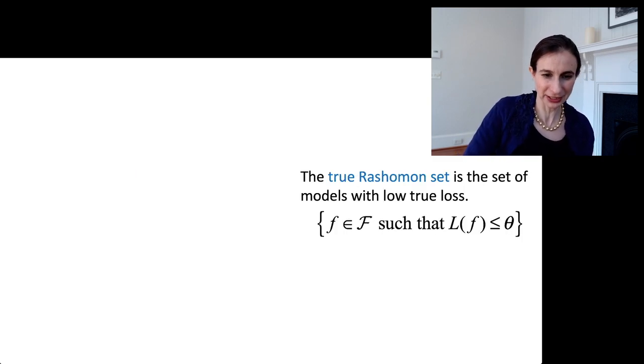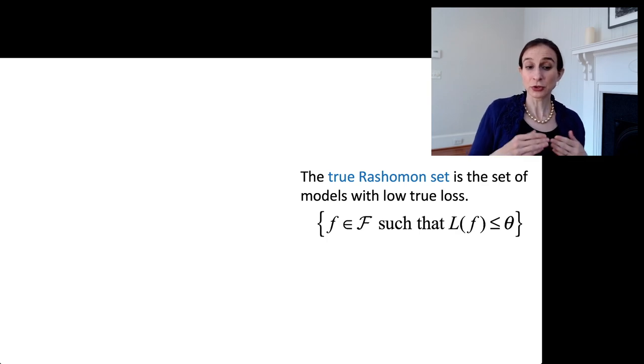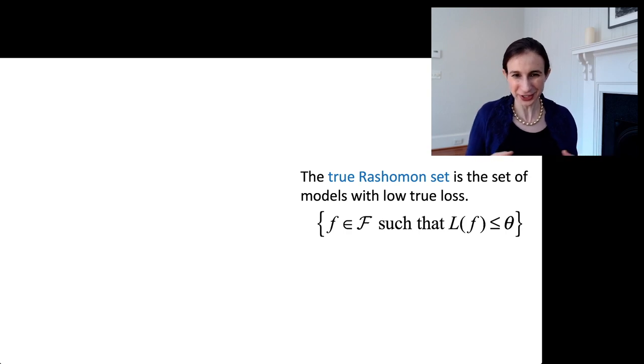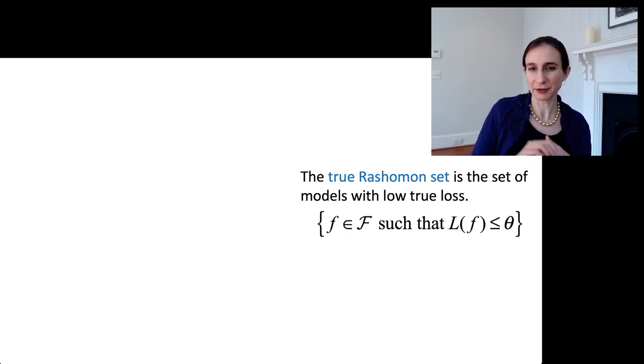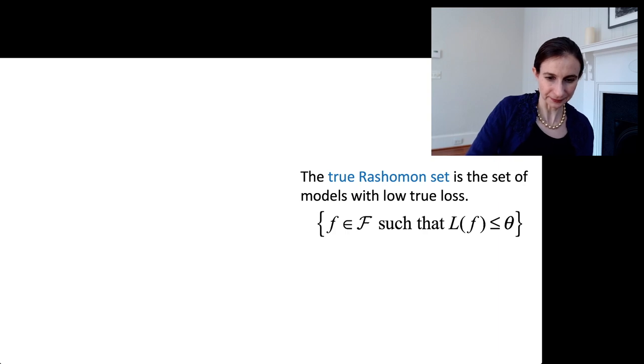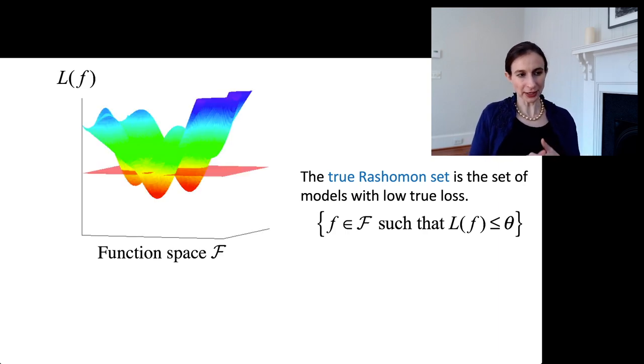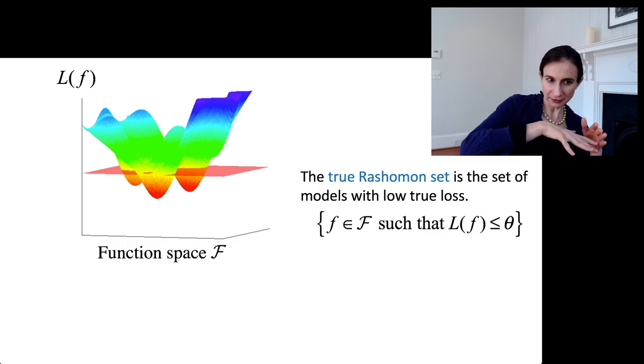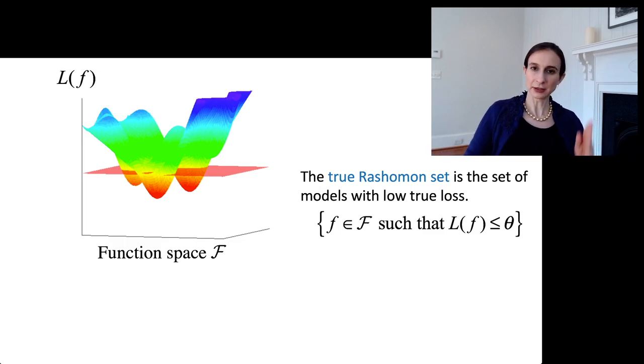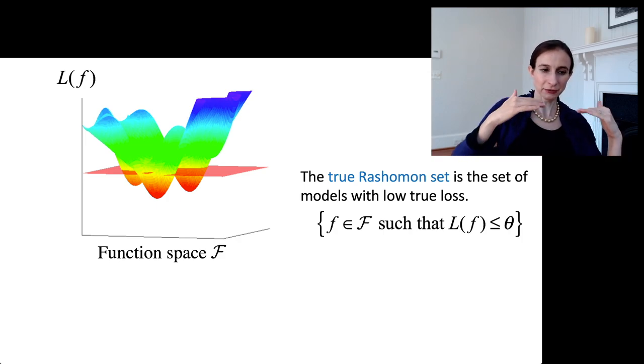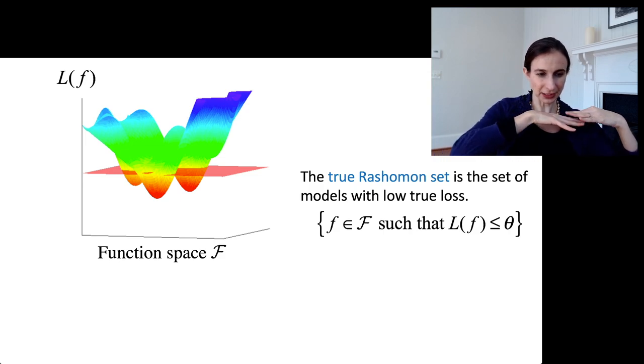Okay, so let me explain a little bit of the terminology just to recap. So the true Rashomon set is the set of predictive models that have low true loss. So this is the loss that if you knew the whole distribution, these are the functions that have low true loss. Okay, so if you plotted the loss, so here I have function space on the bottom and then the loss on the vertical. And the Rashomon set are the functions that have loss below this kind of plane that I've drawn in this figure.